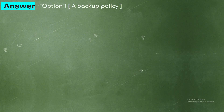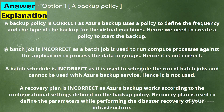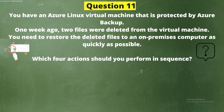The correct answer is option 1, a backup policy. Explanation: A backup policy is correct, as Azure Backup uses a policy to define the frequency and type of backup for virtual machines. A batch job is incorrect, as it is used to run compute processes against applications to process data in groups. A batch schedule is incorrect, as it is used to schedule and run batch jobs. A recovery plan is incorrect, as it is used to define parameters for disaster recovery of your infrastructure.